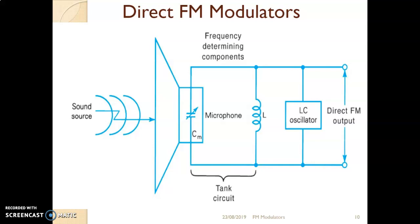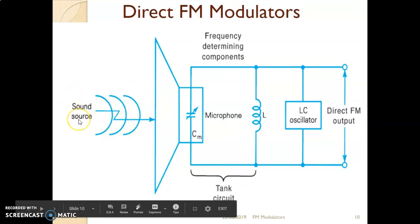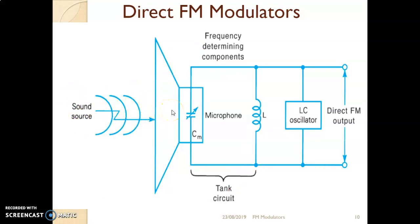In this diagram, you can see there is one sound source acting as a modulating signal coming from some device and transducer. This modulating signal is given to a tank circuit or tuned circuit or resonant circuit, which has a component of inductor and capacitor. This sound source is coming from a microphone, and the inductor and capacitor form a tank circuit which determines the frequency. The output of this tank circuit is given to an LC oscillator, and the output of the LC oscillator will be the direct FM.